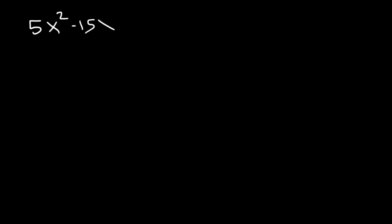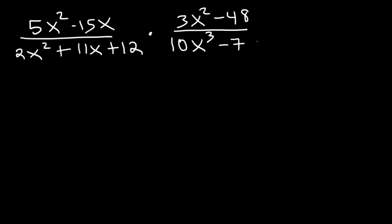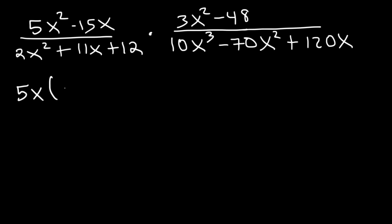Now let's try another example: 5x squared minus 15x, divided by 2x squared plus 11x plus 12, multiplied by 3x squared minus 48, divided by 10x cubed minus 70x squared plus 120x. Go ahead and simplify — factor everything and cancel. For 5x² − 15x, take out the GCF of 5x: that gives 5x(x − 3). 5x² divided by 5x is x; negative 15x divided by 5x is negative 3.